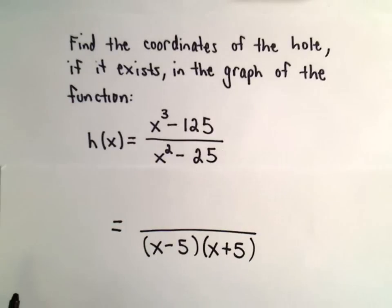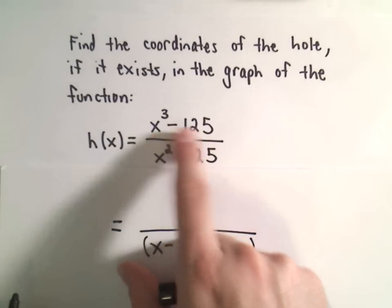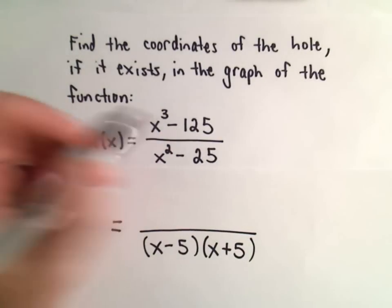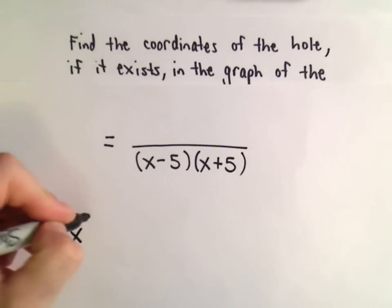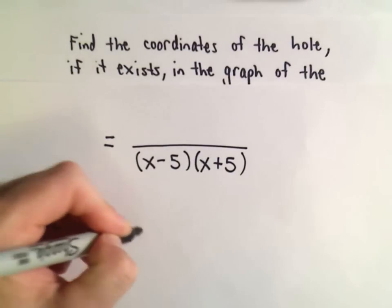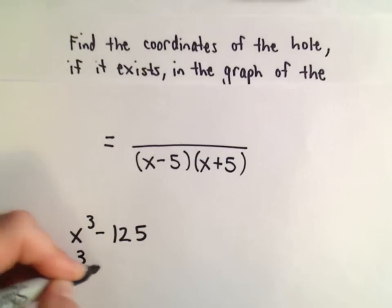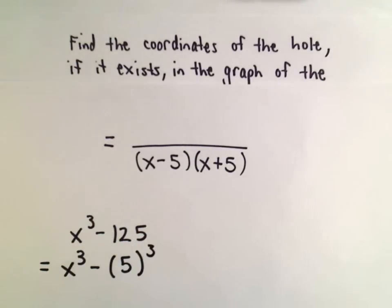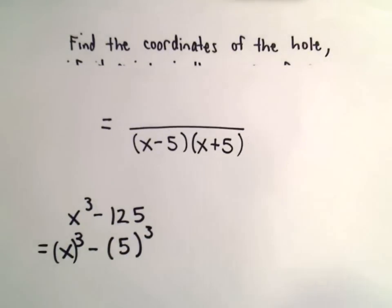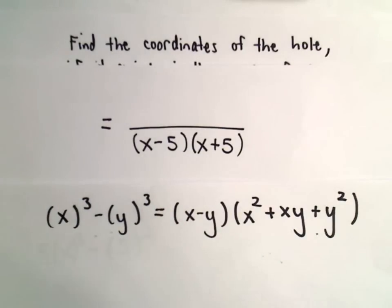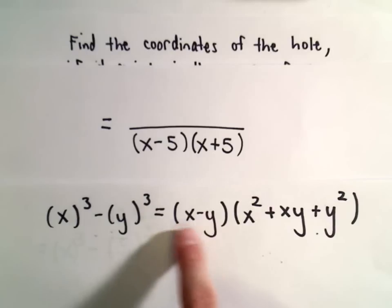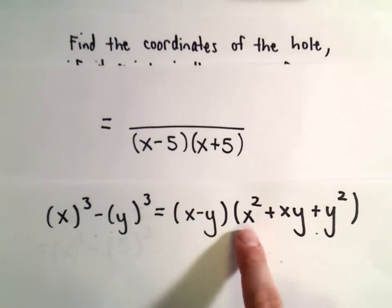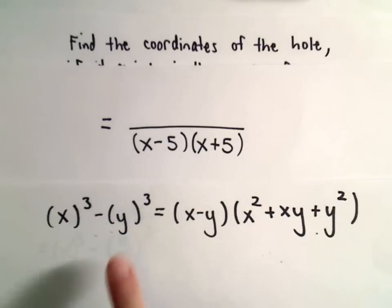And recall there's also a formula for the difference of perfect cubes. X cubed minus 125, there's a formula. Notice we can write x cubed minus 125 as x cubed minus 5 to the third power. So, x to the third power minus 5 to the third power. And in case you've forgotten, there is the difference of perfect cubes formula. If you have a quantity cubed minus a quantity cubed, so x cubed minus y cubed, we have x minus y times x squared plus x times y plus y squared.